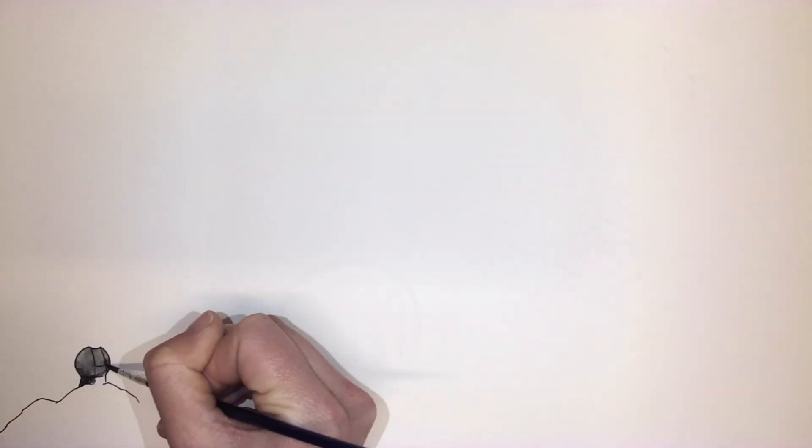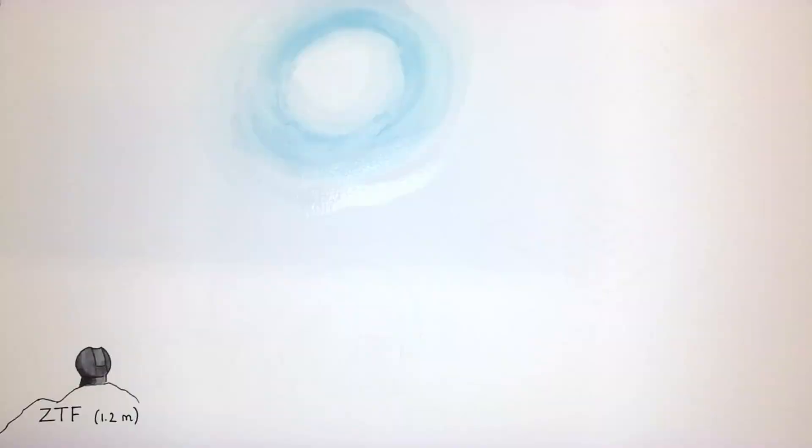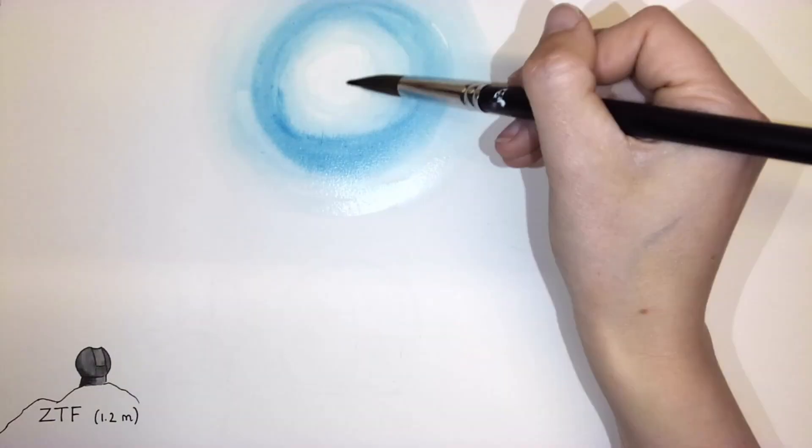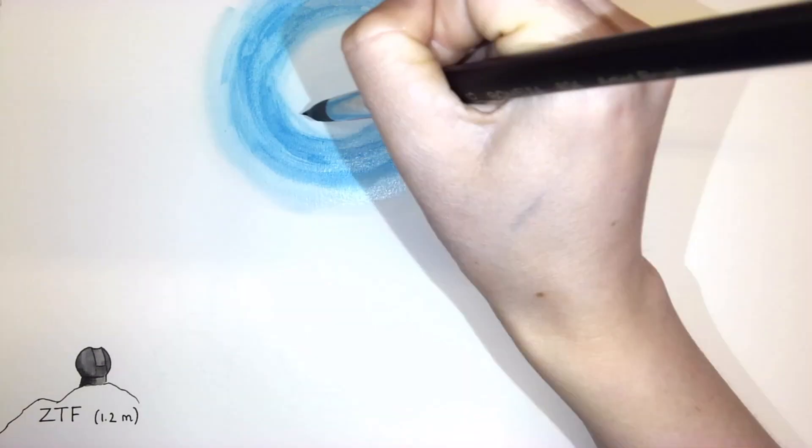While ZTF allowed us to discover Supernova Zwicky because of its anomalous brightness, it was not powerful enough to resolve the four separate images. Supernova Zwicky just appeared as a dot.